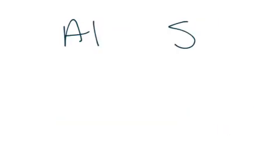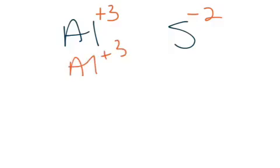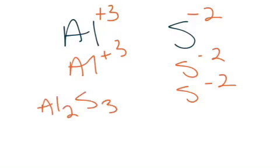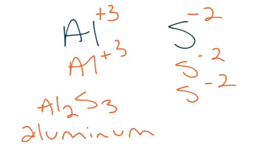One last example: aluminum comes from group 3a, which is always plus 3. Sulfur comes from group 6a, which is always minus 2. This is a little different because the common multiple that 3 and 2 share is 6. To make an overall plus 6, we need 2 aluminums. And to make a negative 6, we need 3 sulfurs — that's the only way these two can combine to reach a neutral charge. So the symbol for aluminum and sulfur is Al₂S₃. Naming-wise, aluminum keeps its name and sulfur changes to sulfide.